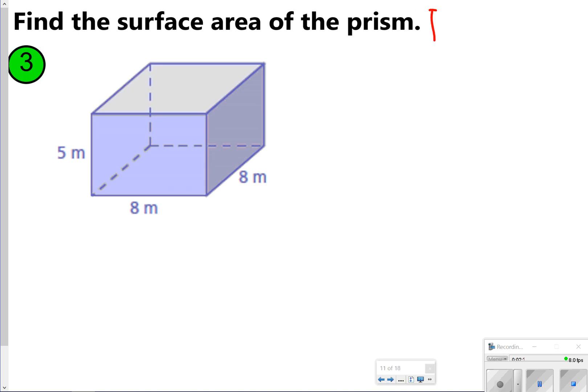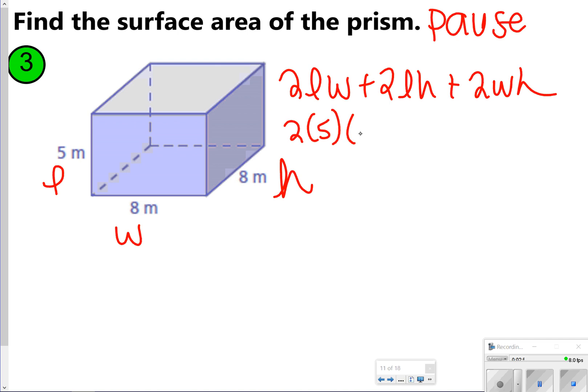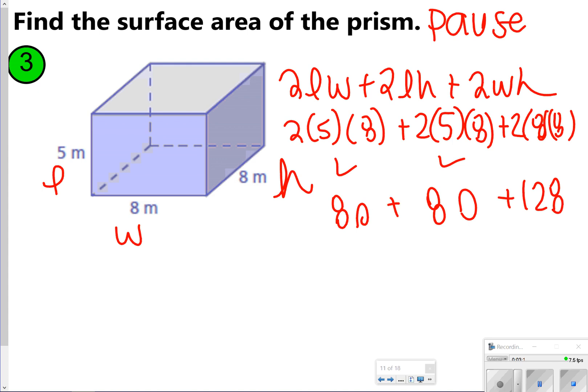Go ahead and try number 3 as well. Again, let's pause it right here, try it, and once you're done, click play. I'm going to say 5 is L, 8 is W, and this other 8 is H. Again, I have 2LW plus 2LH plus 2WH. I should have done 2 times 5 times 8, and then 2 times 5 times 8 again because that's the height again, and then 2 times 8 times 8. 2 times 5 times 8, both of these are going to give me 80, and then 2 times 8 times 8 is 128. I'm going to add all these together and get 288 meters squared.